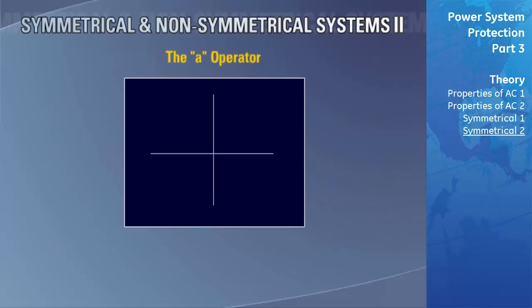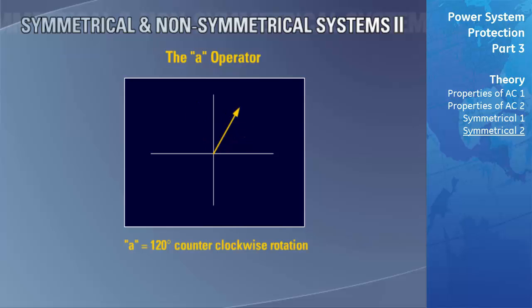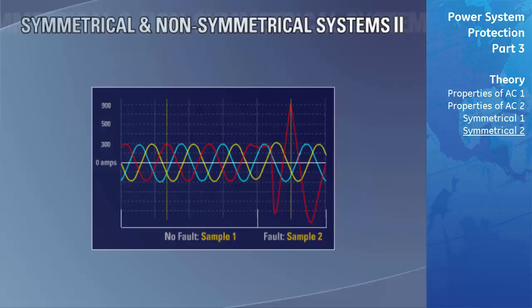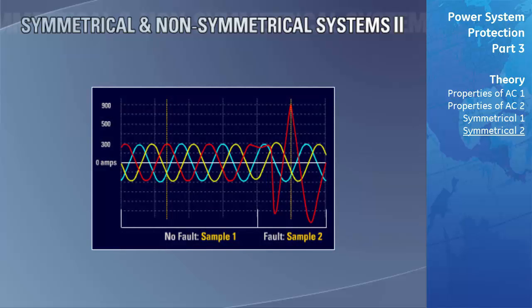The A operator shifts a vector by 120 degrees counterclockwise, similar to how the J operator in the complex plane shifts a vector by 90 degrees counterclockwise. The A-squared operator shifts a vector by 240 degrees counterclockwise. Let's see how Fortescue's formulas work under a real-world fault condition, using waveform data captured by a GE Multilin SR760 feeder management relay.